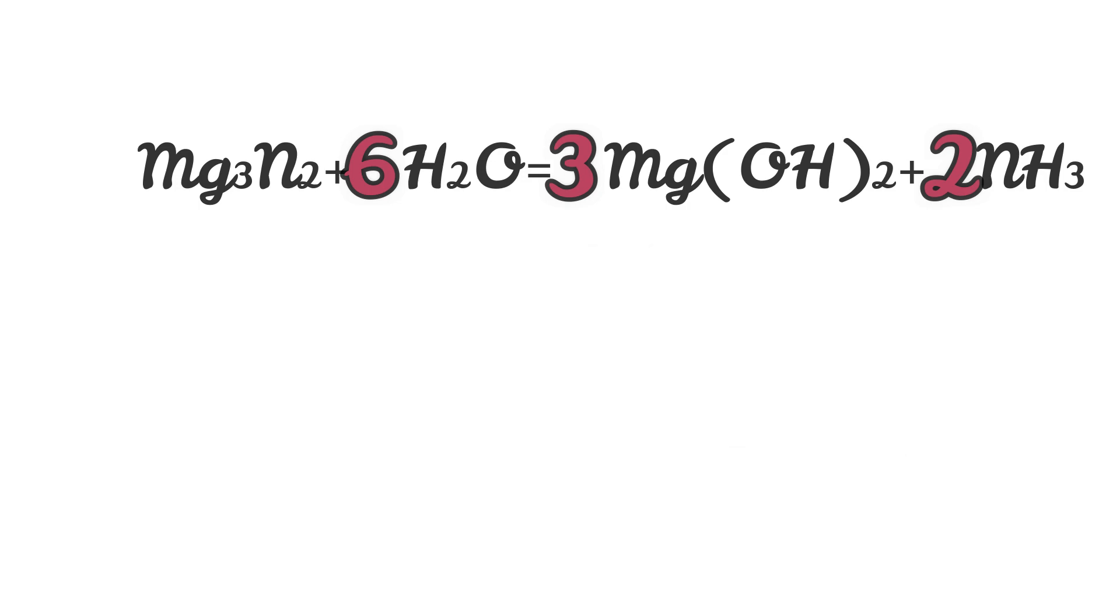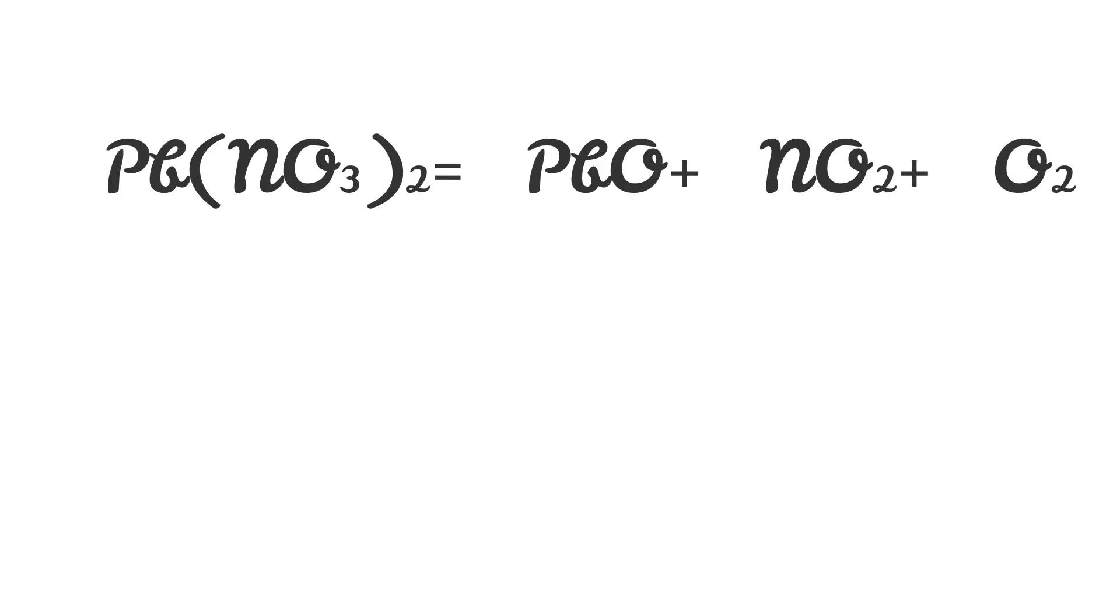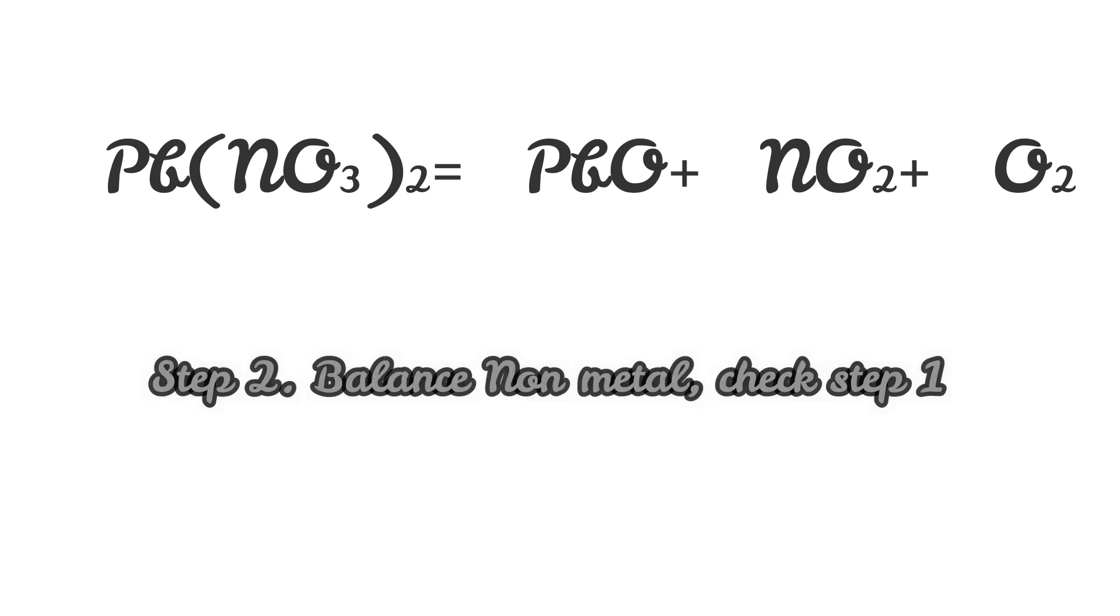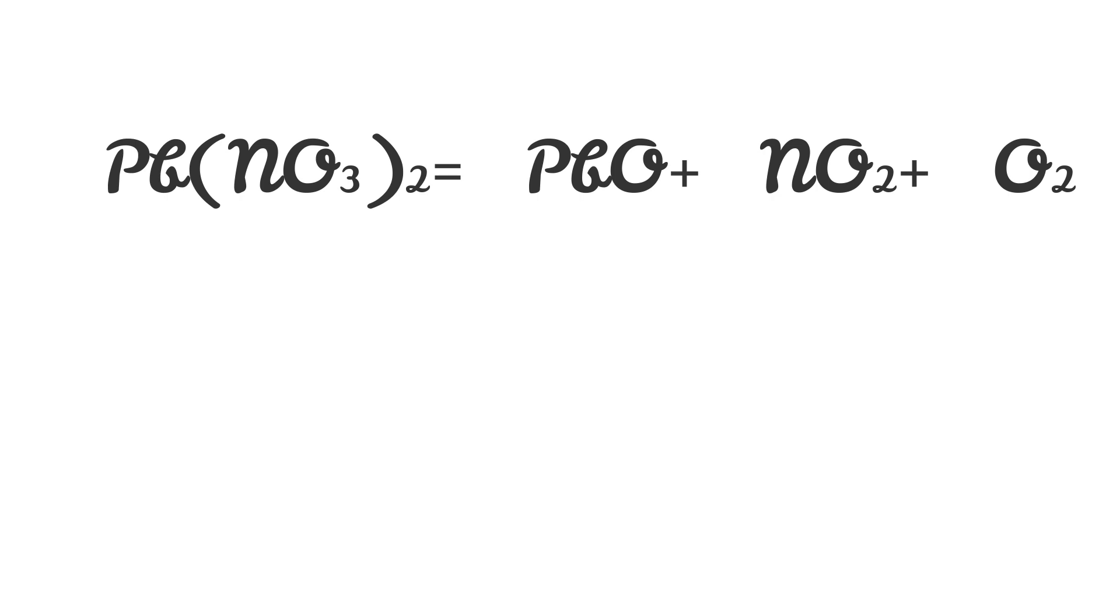Having fun? Let's make it a bit harder. Here, metal Pb is already balanced on both sides, so let's move on to step two. The non-metal is N. Reactant Pb(NO3)2 has two nitrogens while product NO2 has only one, so let's put two in front of NO2. Check step one: Pb seems balanced yet.